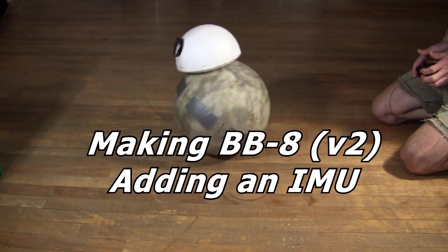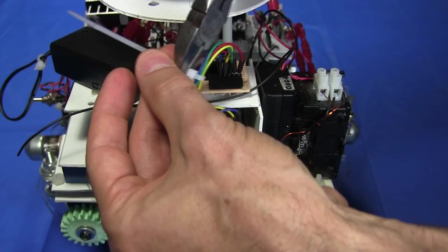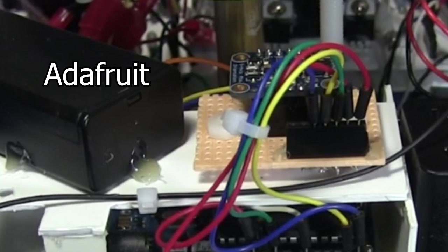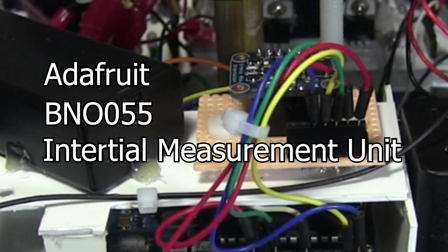Hi gang! This is part 4 of making my BB-8 droid, version 2, and in this video I'll add the Adafruit BNO-055 Inertial Measurement Unit, or IMU.